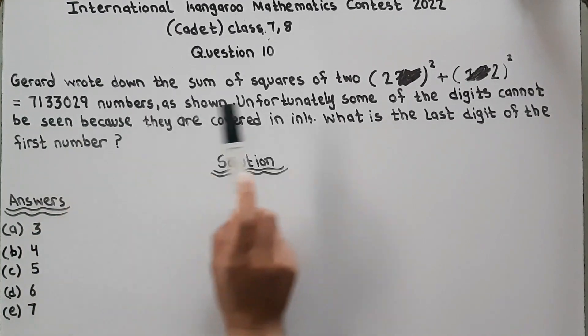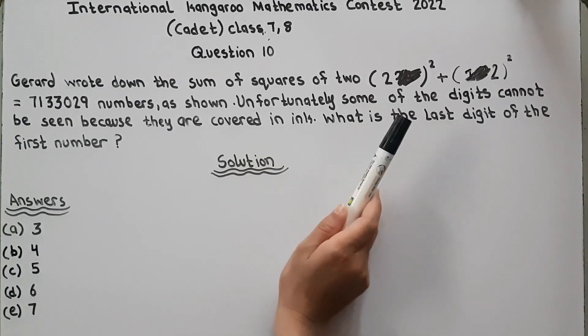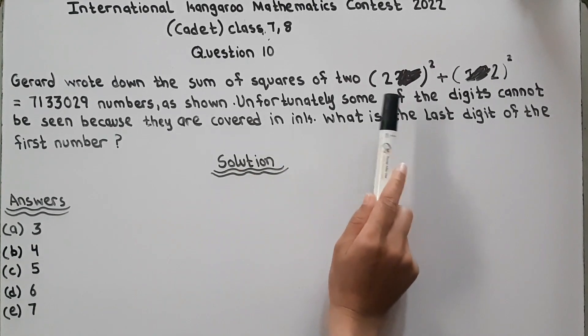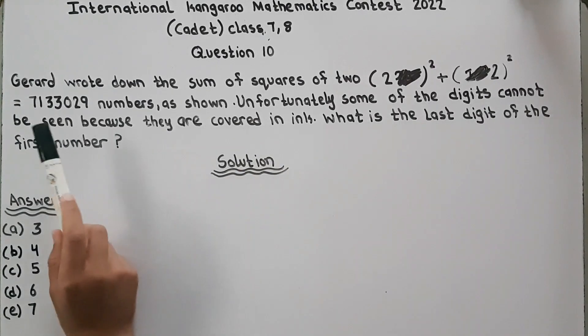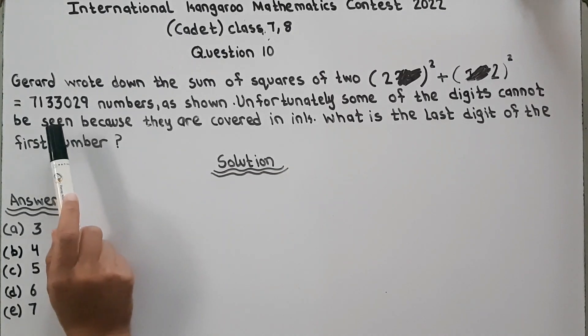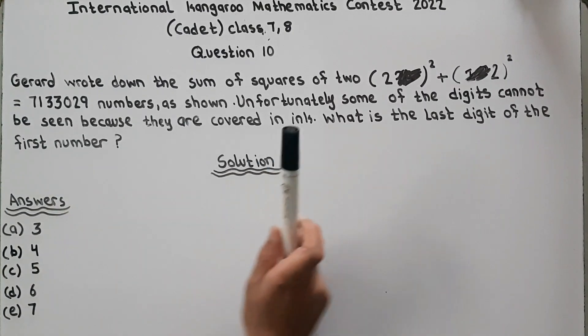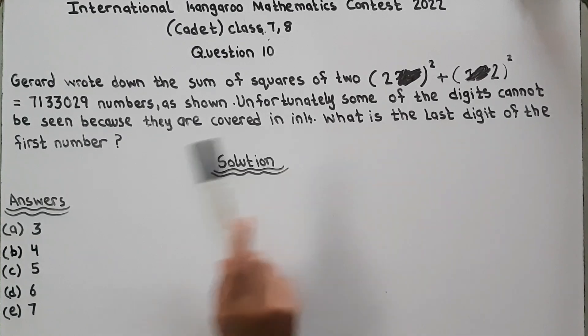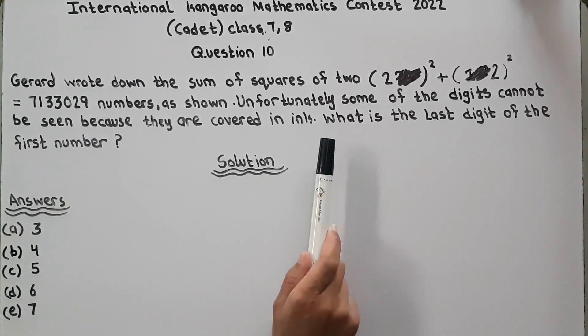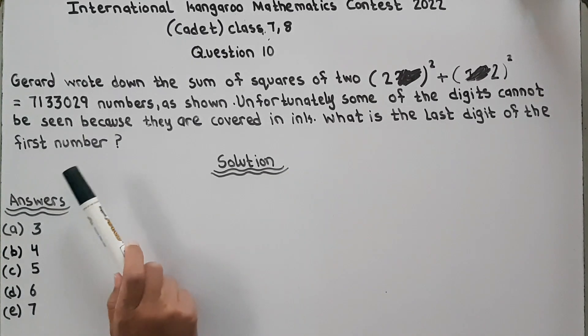Gerard wrote down the sum of squares of two numbers. These two numbers equal 1133019 as shown. Unfortunately, some of the digits cannot be seen because they are covered in ink. What is the last digit of the first number?